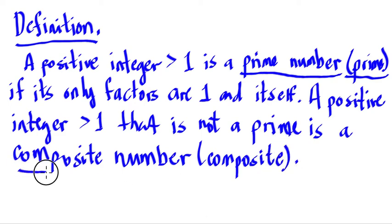Let me read it again. A positive integer greater than 1 is a prime number, or simply call it as a prime, if its only factors are 1 and itself. So surely it has only two factors. A positive integer greater than 1 that is not a prime, that is, it doesn't have only factors of 1 and itself, is called a composite number.